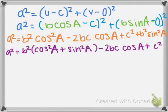And then, because we know cosine squared A plus sine squared A is equal to 1 because of the Pythagorean identities, we can factor 1 in, or we can substitute 1 into where cosine squared A plus sine squared A is.